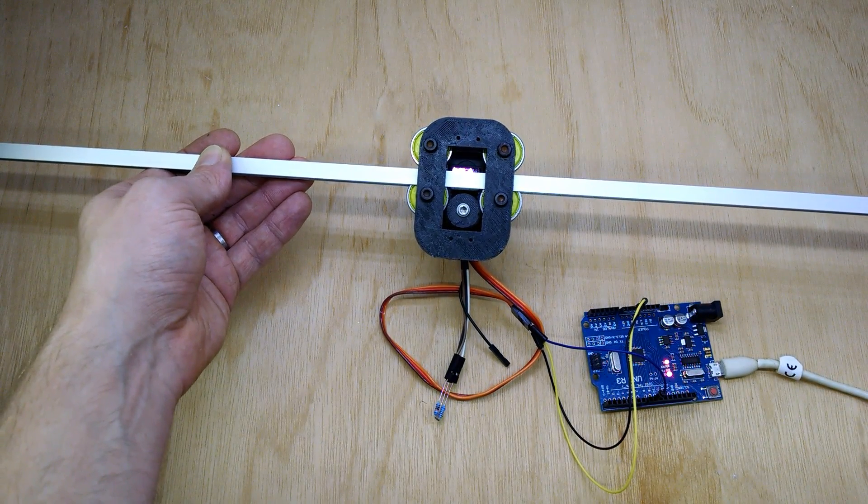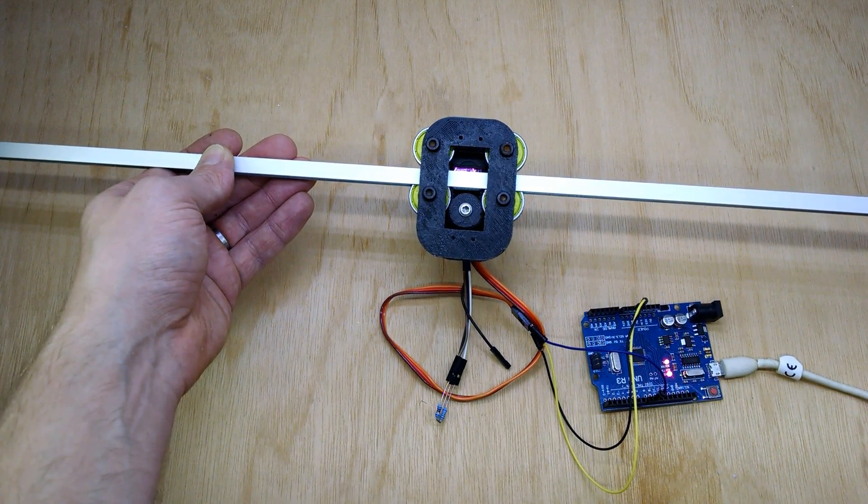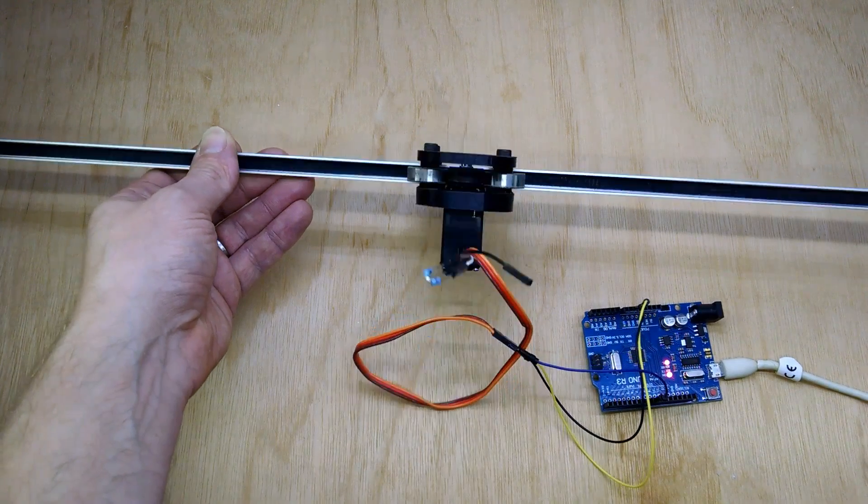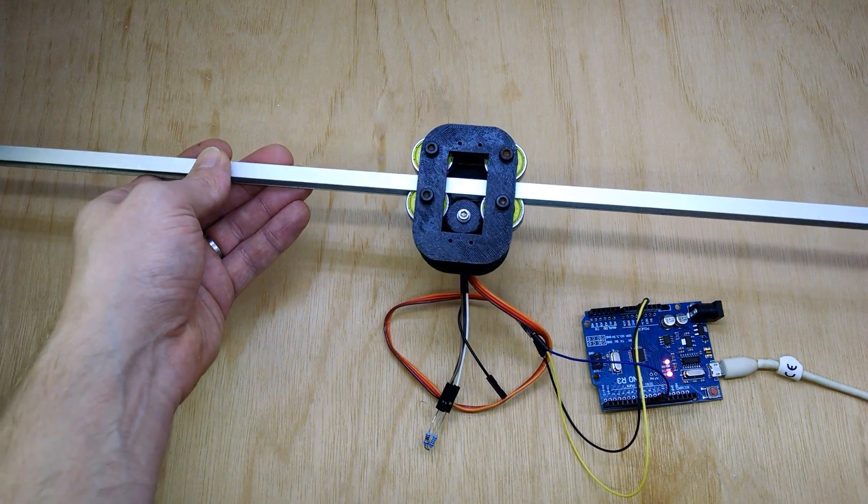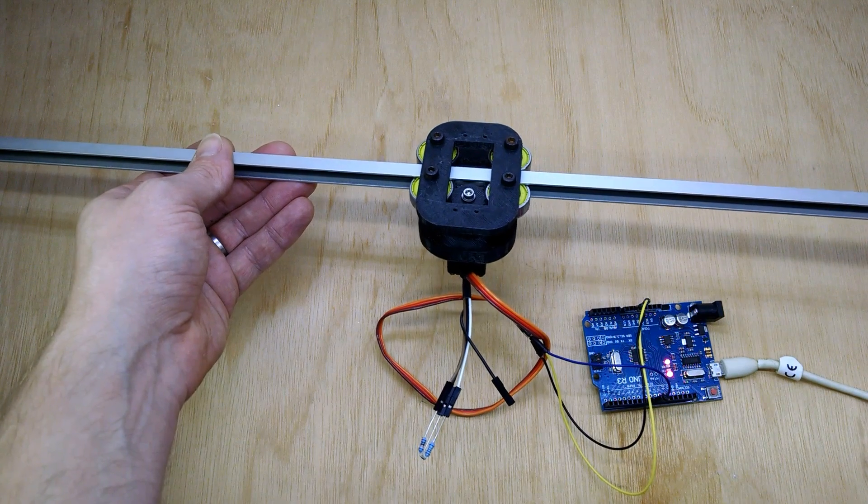Hi there, this video is about a linear actuator I've made from a piece of aluminum profile, a metal gear servo, some 3D printed parts, and some skateboard bearings.